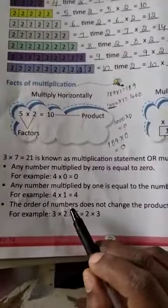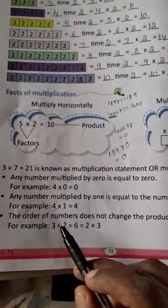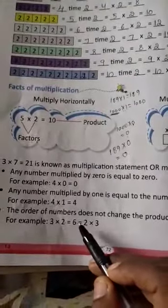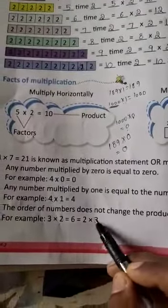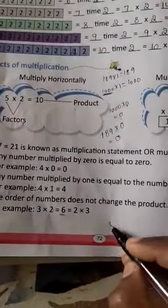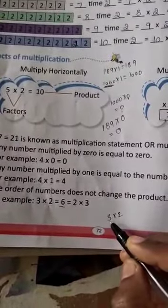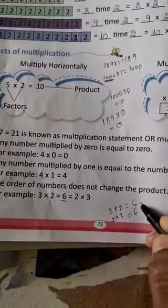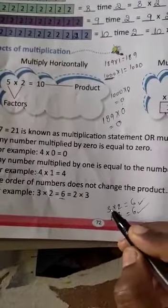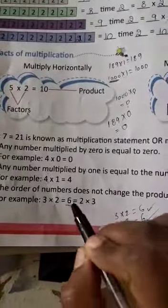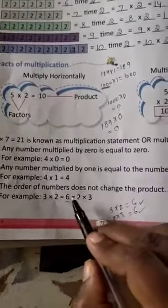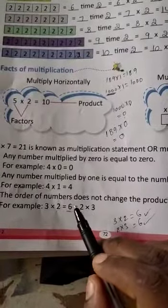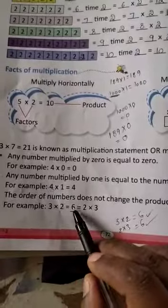Third property: the order of numbers does not change the product. For example, 3 into 2 is equal to 6, and 2 into 3 is also equal to 6. You can change the order of numbers and the product remains the same.